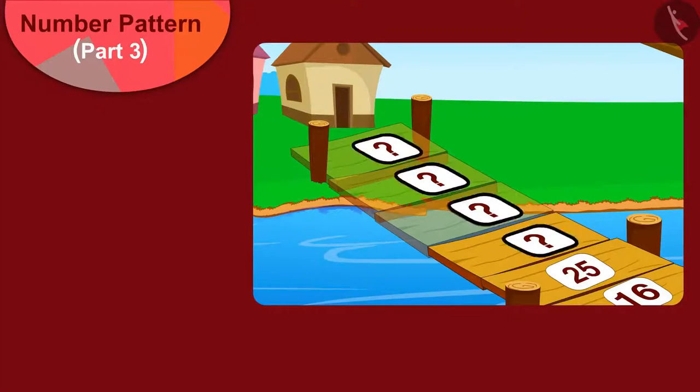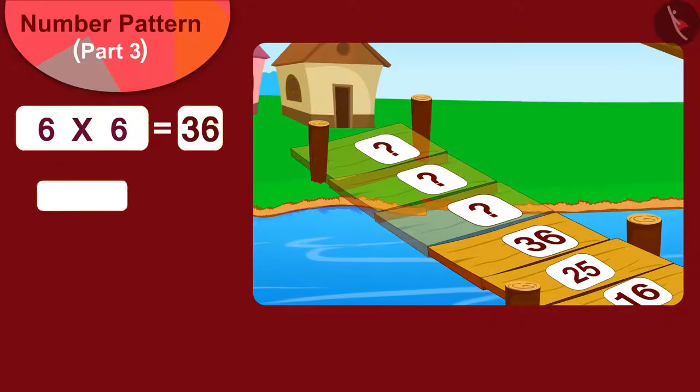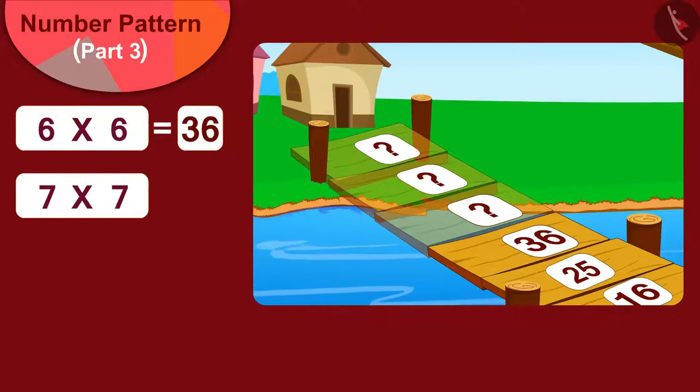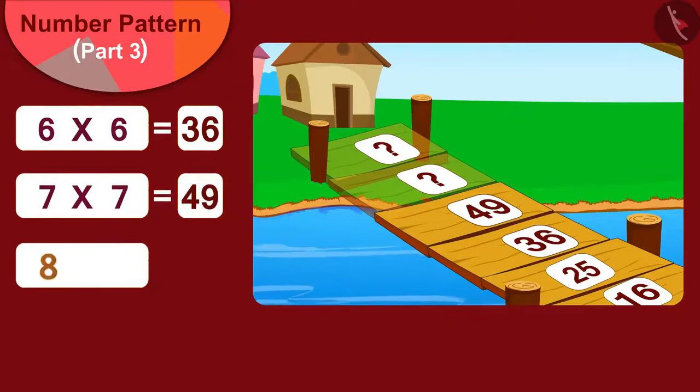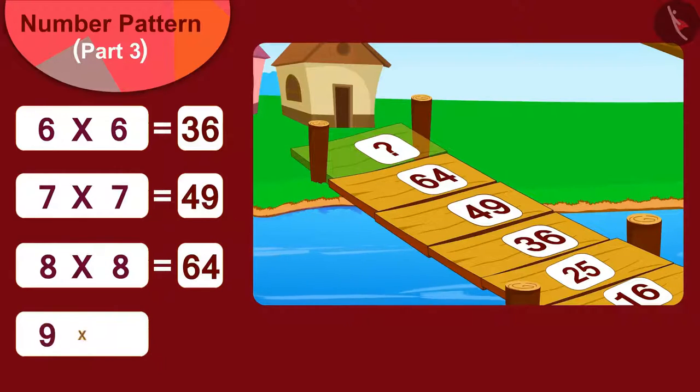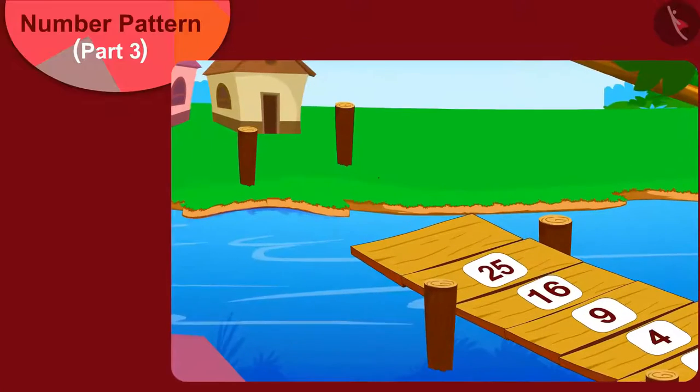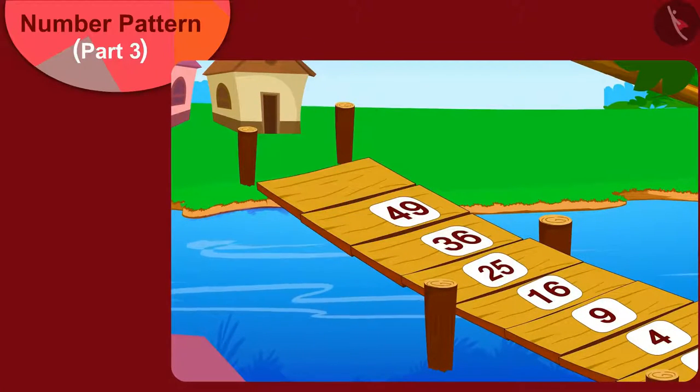Yes, the remaining four planks of the bridge will be numbered: six times six, thirty-six; seven times seven, forty-nine; eight times eight, sixty-four; and nine times nine, eighty-one.